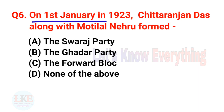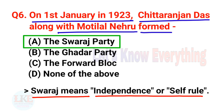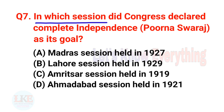Question number six: On 1st January 1923, Chittaranjan Das along with Motilal Nehru formed the Swaraj Party. For your kind information, Swaraj means independence or self-rule.